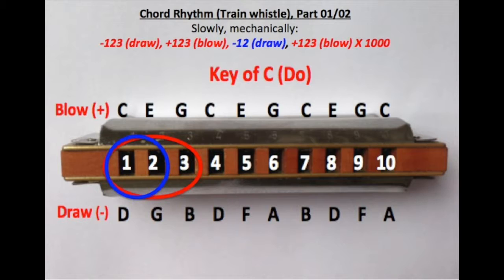Now you do in-out just in the one-two-three hole, and then go to the one-two hole, sucking in or drawing in, and then blow out again on the one-two-three. So it's one-two-three in, one-two-three out, one-two in, one-two-three out. Let's do it.